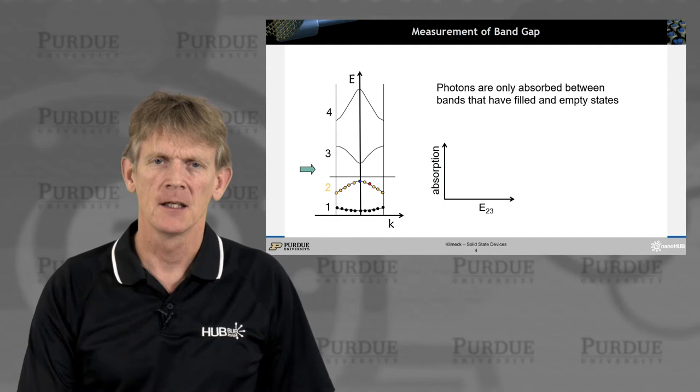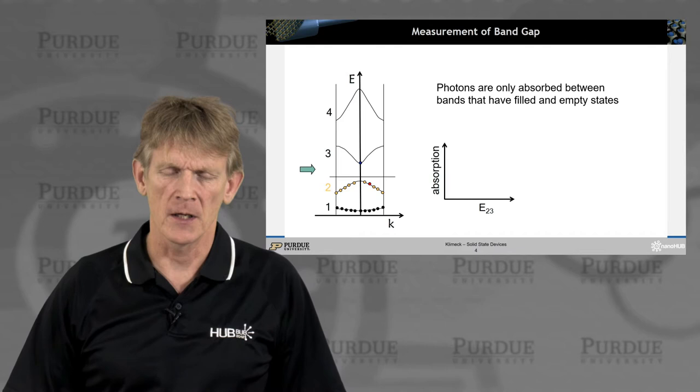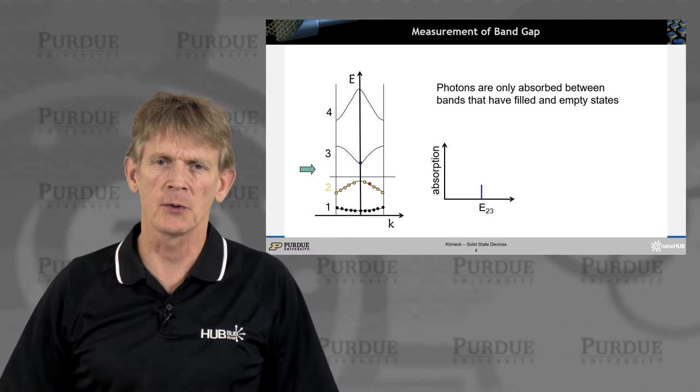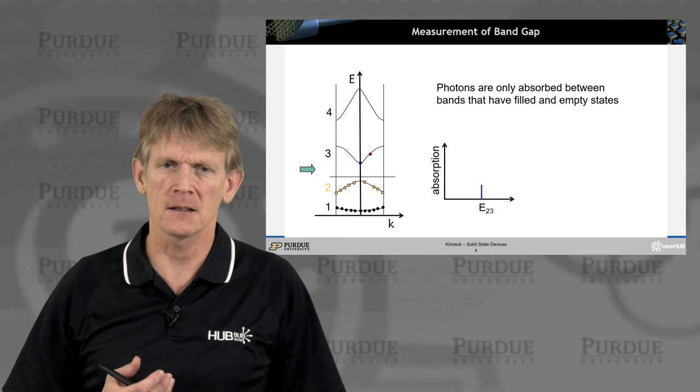A photon can hit the structure and elevate an electron from the valence band into the conduction band, and the photon absorption, if you do a measurement that resolves the wavelength of the photons, you will see an absorption at a specific energy. Let's call that energy 2-3, defining here the band 2 to band 3.